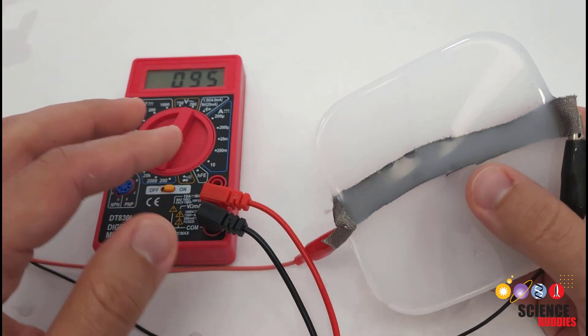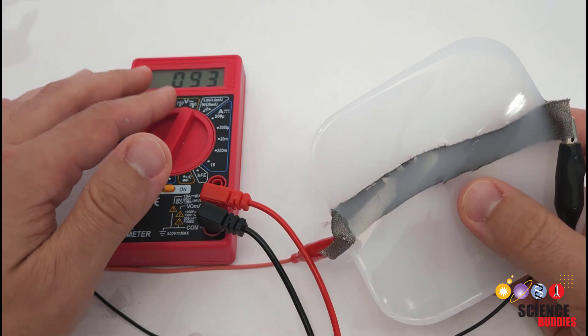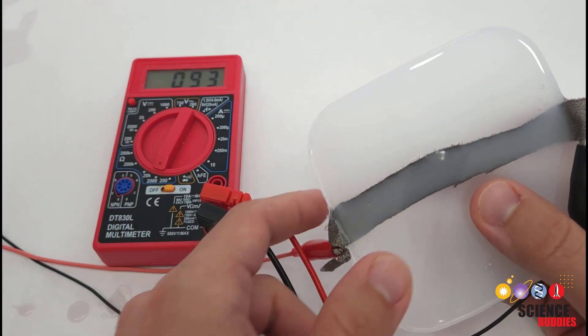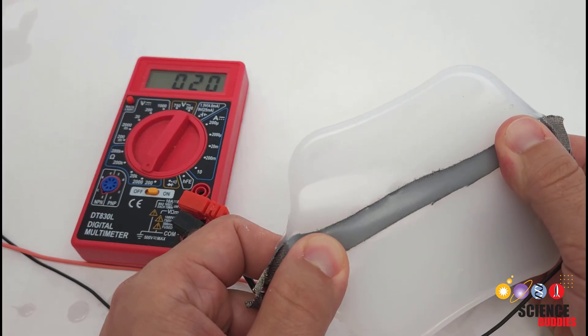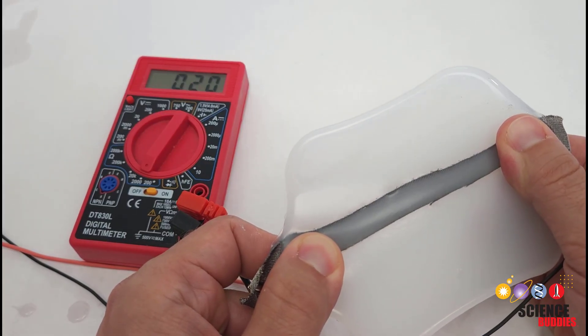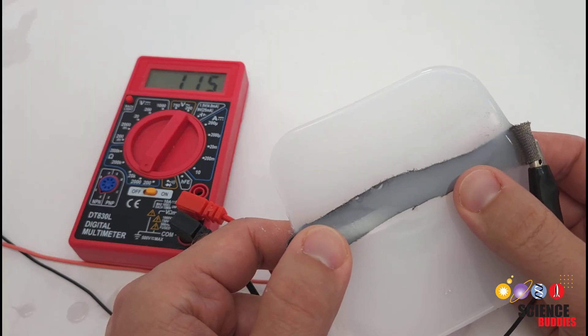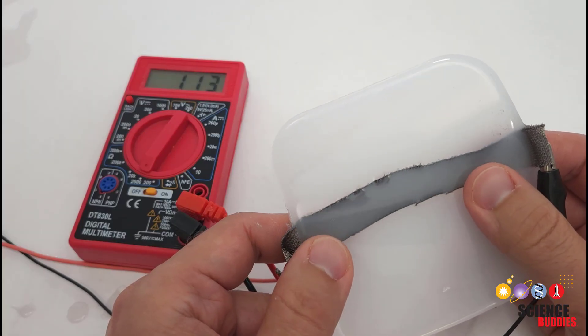But we can see that when I'm not stretching the sheet at all, the resistance is somewhere between 90 and 100 ohms. And then when I stretch it, the resistance drops all the way down to around 20 ohms. When I release it, the silicone contracts again and it bounces back up to around 100 ohms.